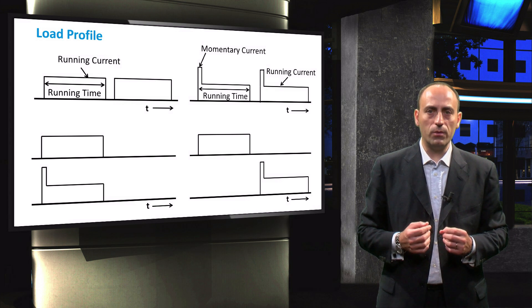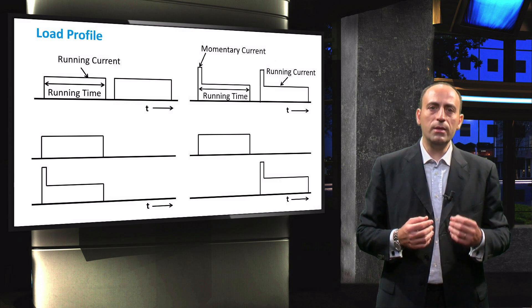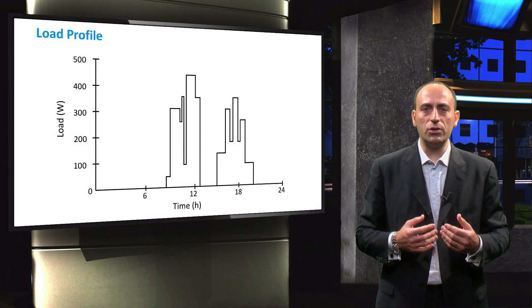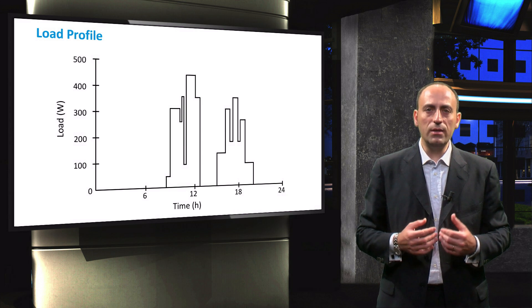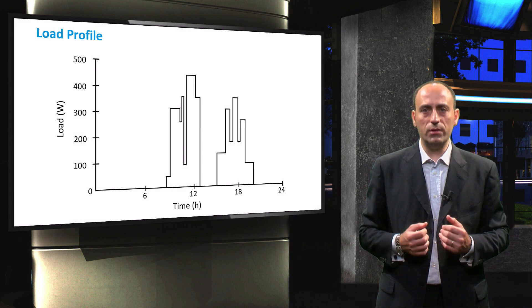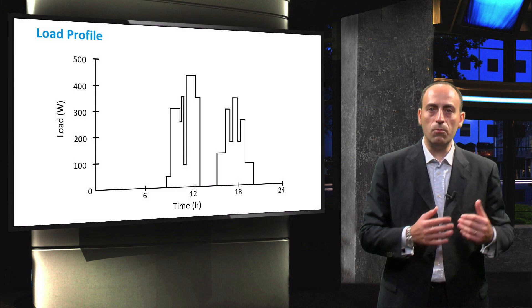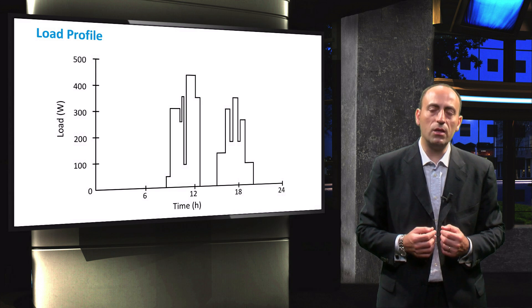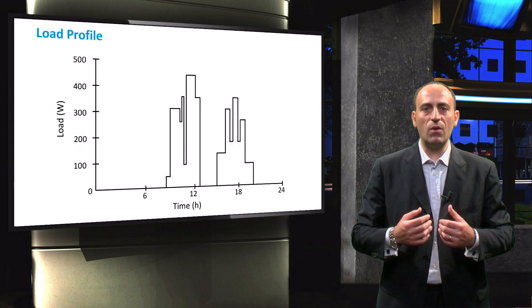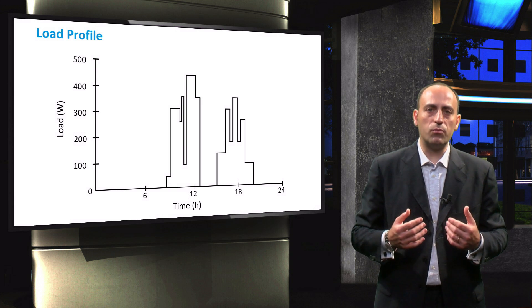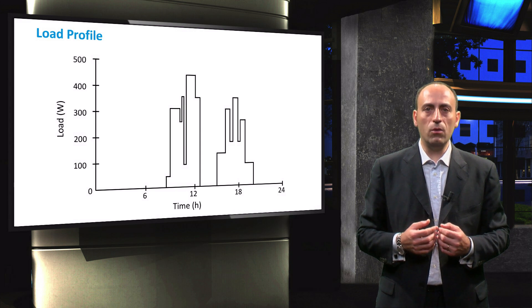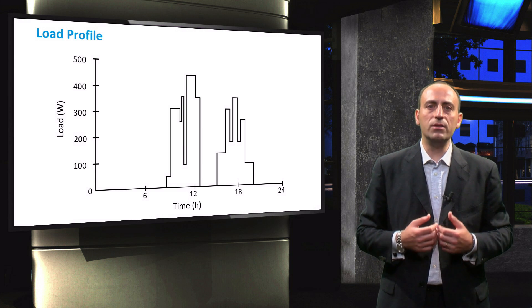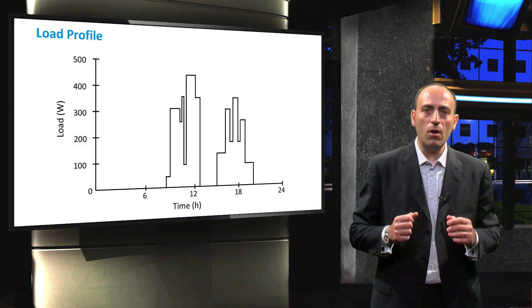By obtaining the load profiles, we can simulate the behavior of the loads connected to the PV system. This is an approximate load profile of an electric bike charging station, where a certain number of e-bikes are being charged at different times during the day. You can see that the load demand of this charging station fluctuates throughout the day. There is a high demand for charging e-bikes during the morning and evening hours, and there are periods in the afternoon where the charging station does not deliver any power. From this load profile, we can extract the instantaneous power, the maximum power consumed during the day, and later determine the total energy consumption of loads over a certain period of time.